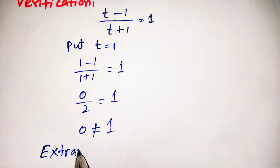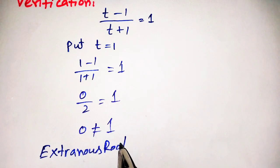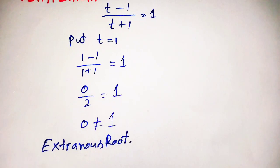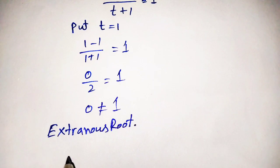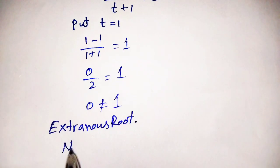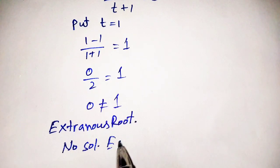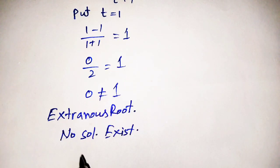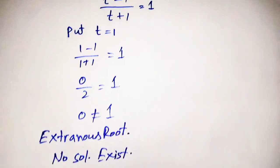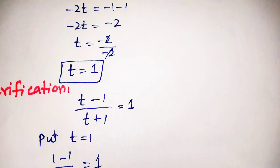Extraneous roots are defined as roots which do not satisfy the given equation. When an extraneous root appears, it means that no solution exists. In the case of extraneous roots, the solution of the given equation will not exist. This is the conclusion of Method 1.